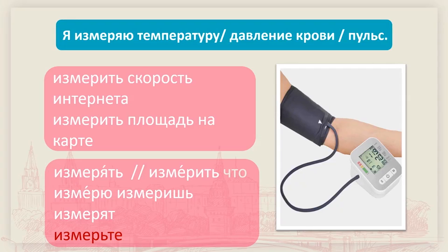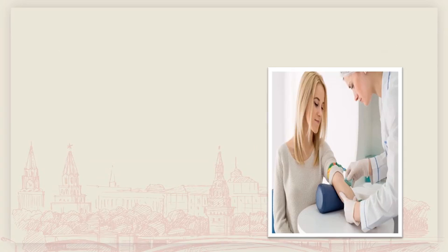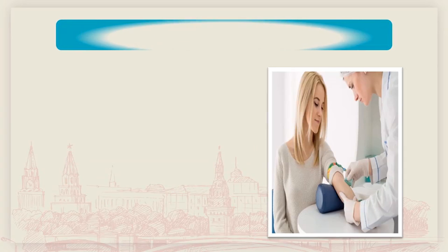измеряю давление крови（我在量血压），измеряю пульс（我在量脉搏）。那么измерять除了有量、测量的意思之外，还可以用在日常生活场景中，比如：измерять скорость интернета（测量网速），скорость是速度，интернет是网。还可以说测量面积：измерять площадь на карте（在地图上测量面积）。